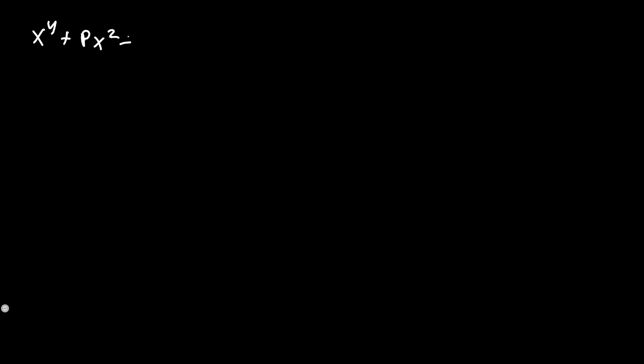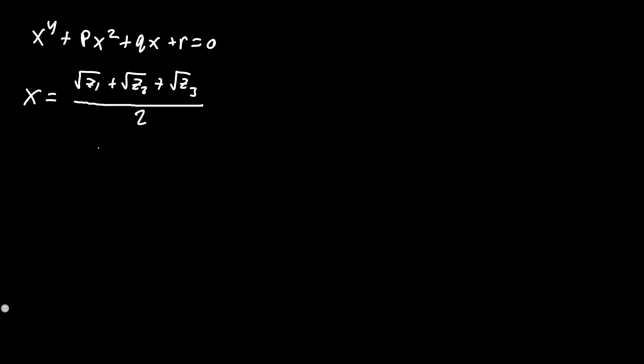In this video, we will be talking about how to solve quartic equations using Euler's method. Euler's method states that when you have a polynomial x⁴ plus bx² plus ux plus r equals 0, the solution typically looks like x is equal to the square root of z1 plus the square root of z2 plus the square root of z3, all over 2, where z is a solution to a cubic.